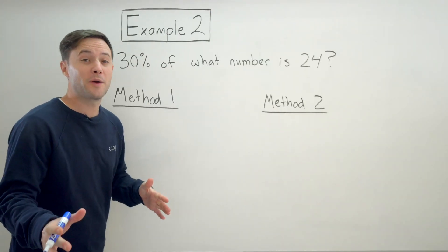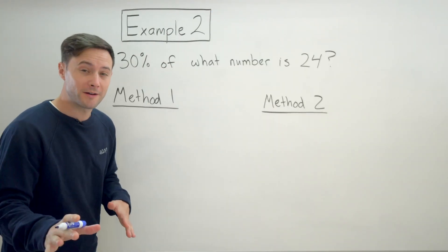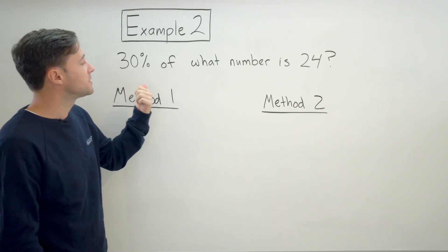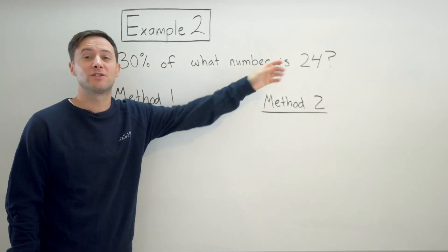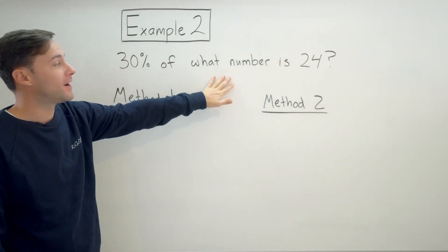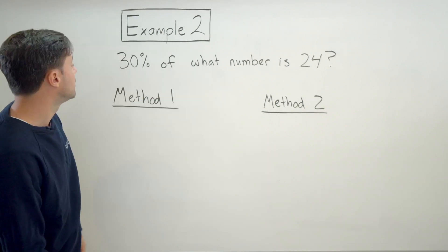Okay, this time around, we're not actually going to be finding the part of the ratio, we're actually going to be finding the whole. So for this question, it says 30% of what number is 24. So 24 is the part, we're trying to find the equivalent whole. So again, we're going to do two methods.